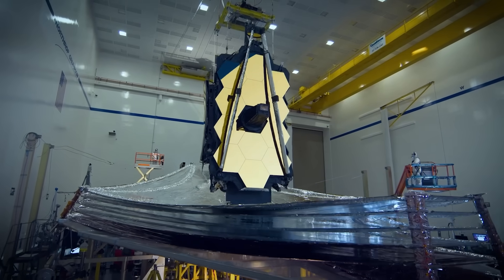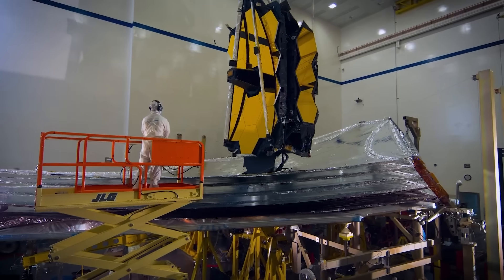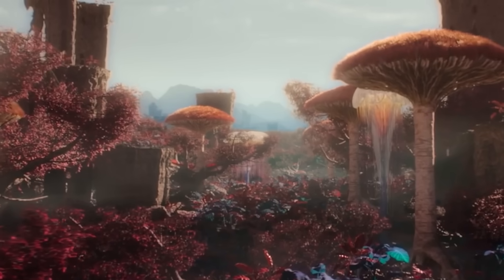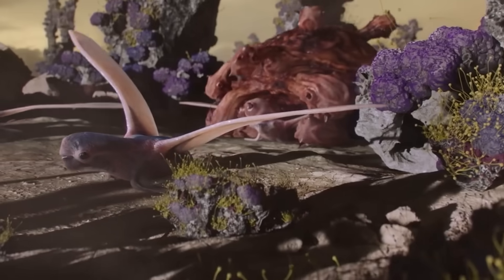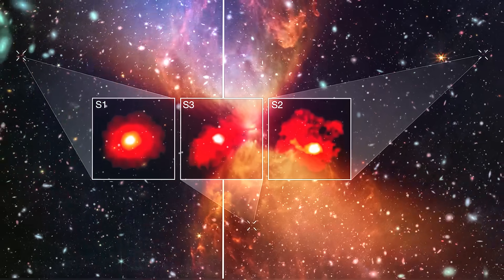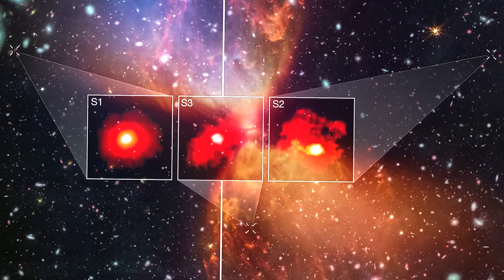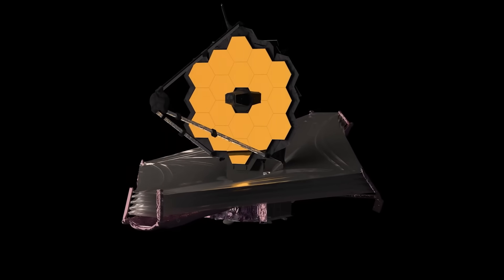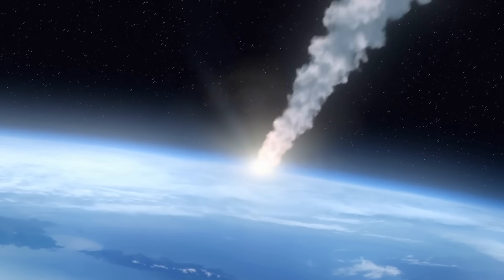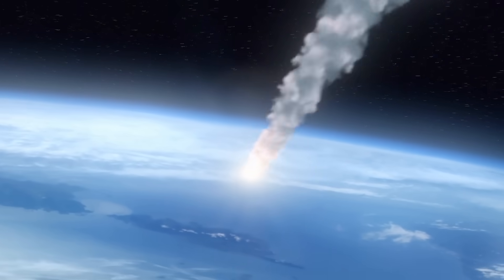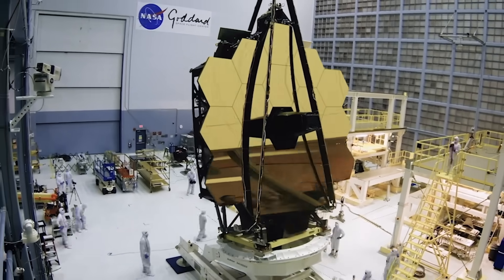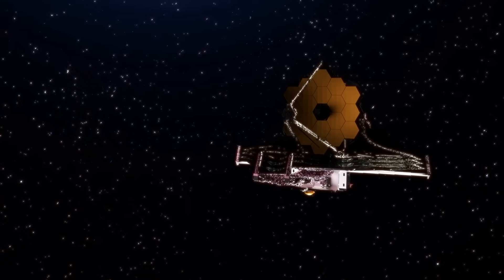So far this year, the James Webb Space Telescope has already revealed some mind-blowing discoveries. Two alien planets are literally falling apart, shedding their outer layers into space, while massive red monster galaxies are challenging everything we thought we knew about the early universe. The telescope also spotted a mysterious rogue object spinning through the galaxy at breakneck speed. These are James Webb Telescope discoveries this year that changed everything.